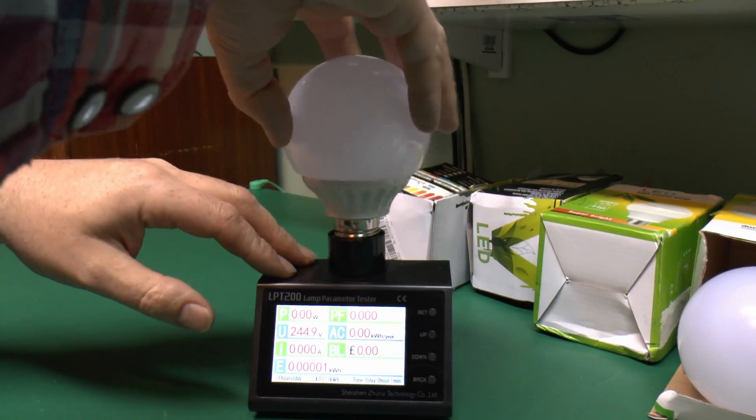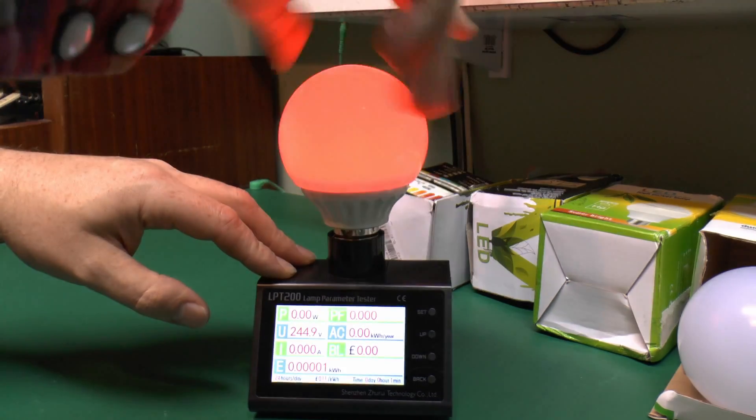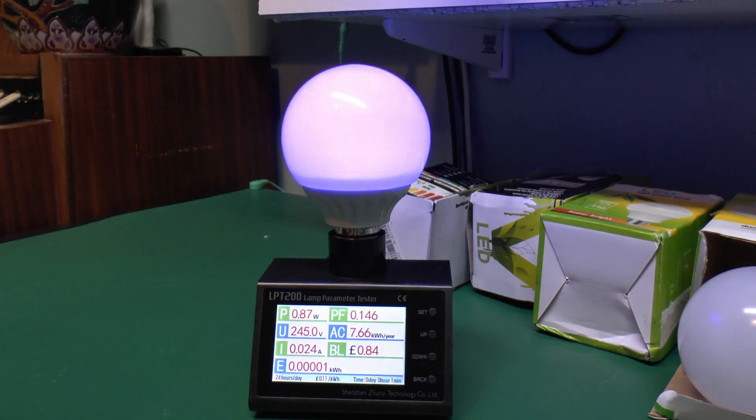No doubt the other two are pretty much the same. Yep, pretty much the same, about 0.7 or 0.8 watts depending on which colour is displayed. These things are supposed to randomly cycle through various colours and that's what they appear to be doing. That's fine.